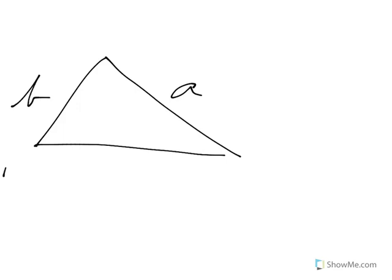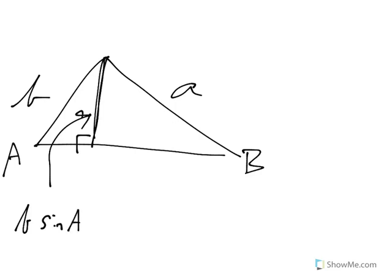And we can prove it, at least part of it, in the general case. At least the first two parts of it. If I draw in this altitude, this side could either be thought of as lowercase b times sine of angle A.